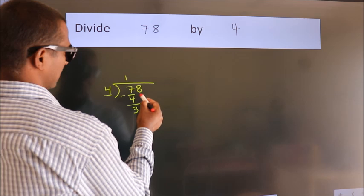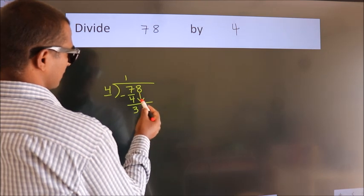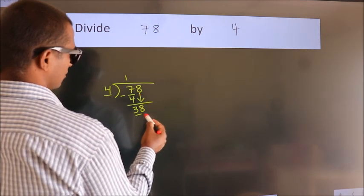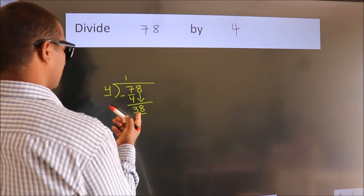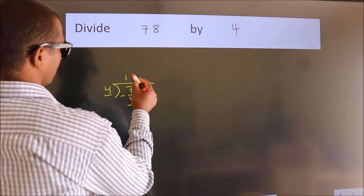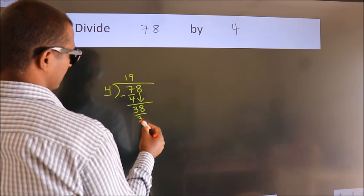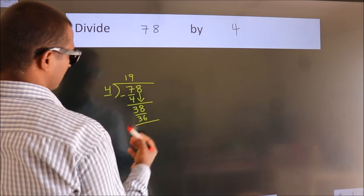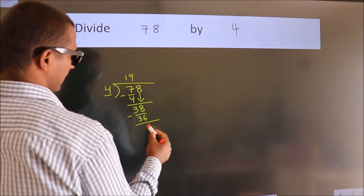After this, bring down the next number, 8. So, 38. A number close to 38 in the 4 table is 4 times 9, which is 36. Now we subtract and get 2.